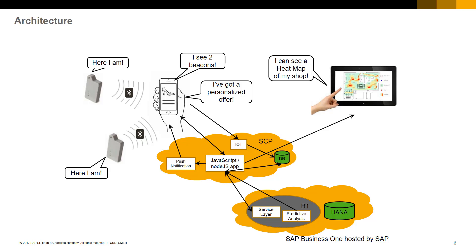SAP Business One is running on SAP Business One Cloud Deployment Services and offers service layer and predictive analysis services. From the SAP Cloud Platform, we leverage the following features: IoT services to manage all the beacons data; push notification features from the SAP Cloud Platform Mobile Services for sending notifications to the customers, like welcome offers; SAP HANA to store all required solution data including IoT messages; and SAP HANA XS to run our JavaScript application. A heat map application has been developed to show customers' location in real time.